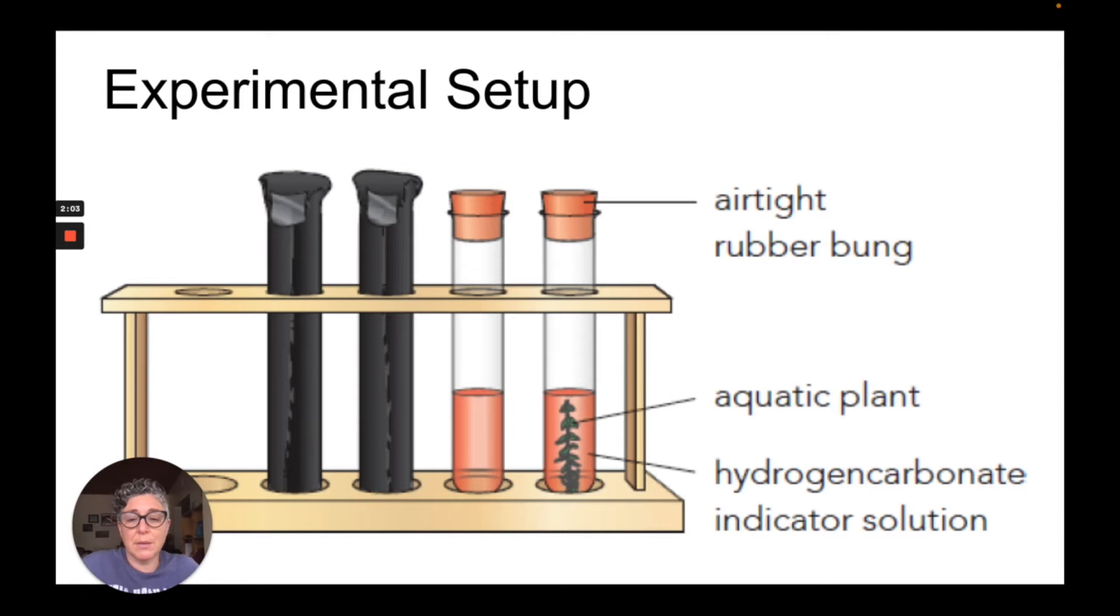This is what our setup is going to look like. We're going to have four test tubes. Two test tubes are going to be covered with black paper to represent the dark conditions and two test tubes will be exposed to light. The two test tubes with the black will look identical as to the contents. They're both set up with airtight rubber bung, meaning that air can't move in and out of those test tubes.